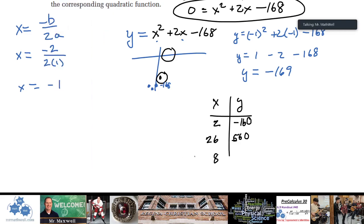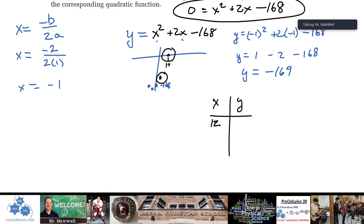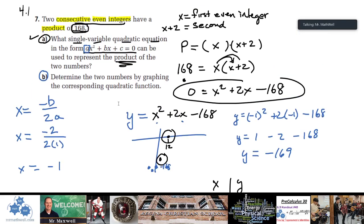What times itself gives us 168? Let's take the square root of 168. It's going to be 12.9, almost 13. This might be a really good spot to start. Let's try X equals 12. It's going to be 12 squared plus 2 times 12 minus 168. That gives us 0. That's exciting because that's an X intercept. That's one of our possible solutions. Remember, the X intercepts represent the possible solutions. We did find 12, that seems to work.